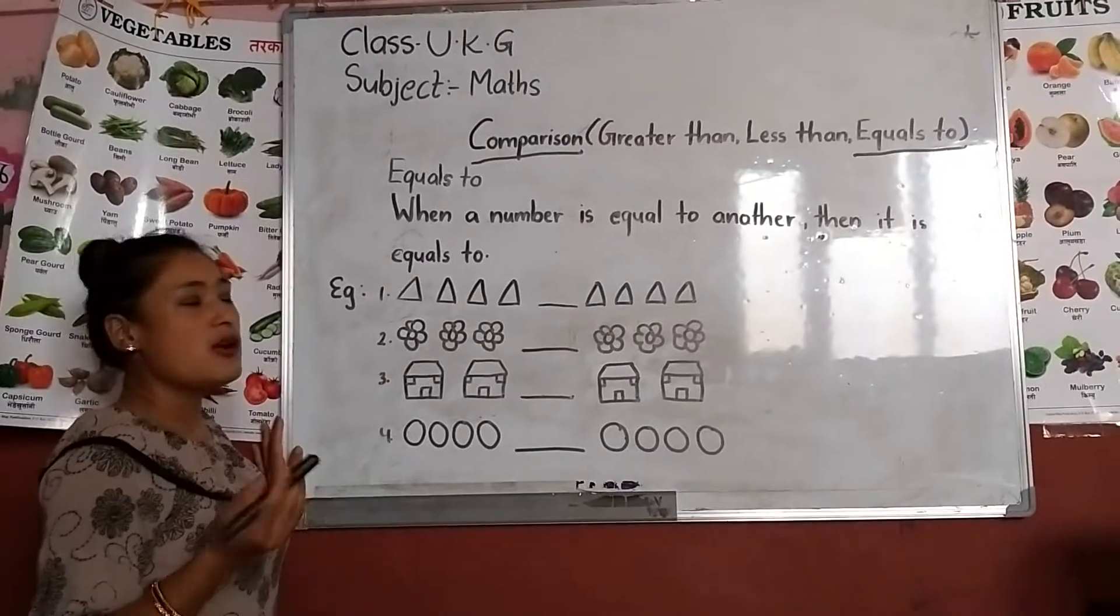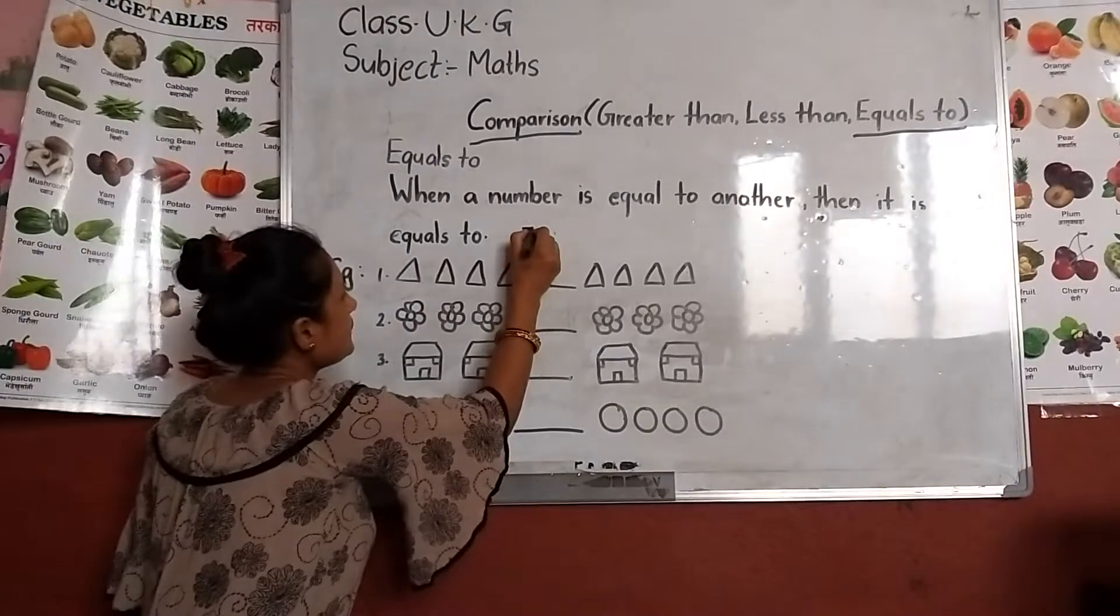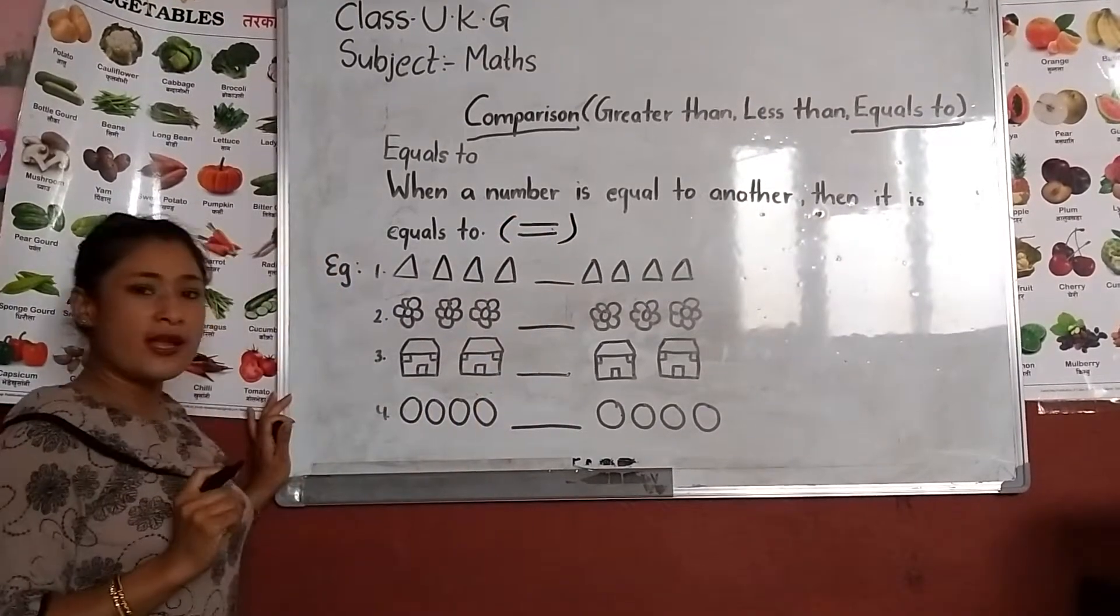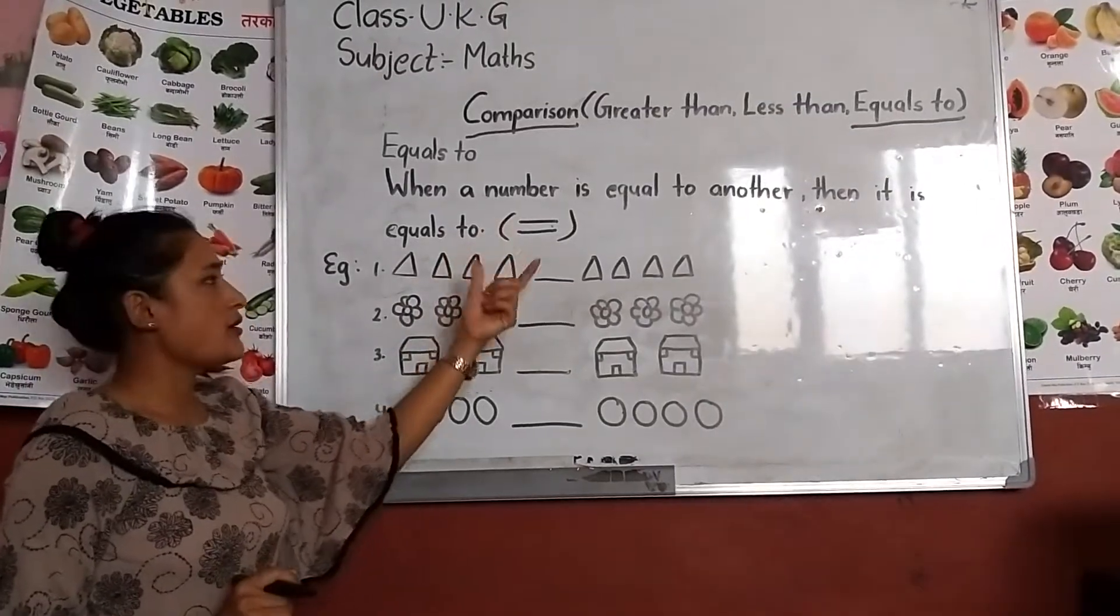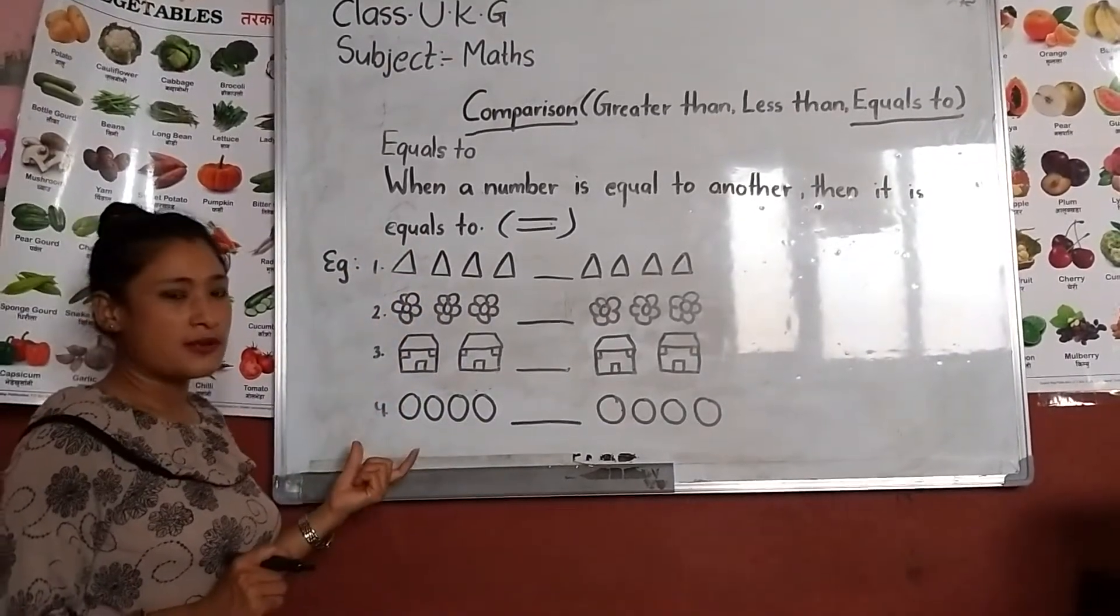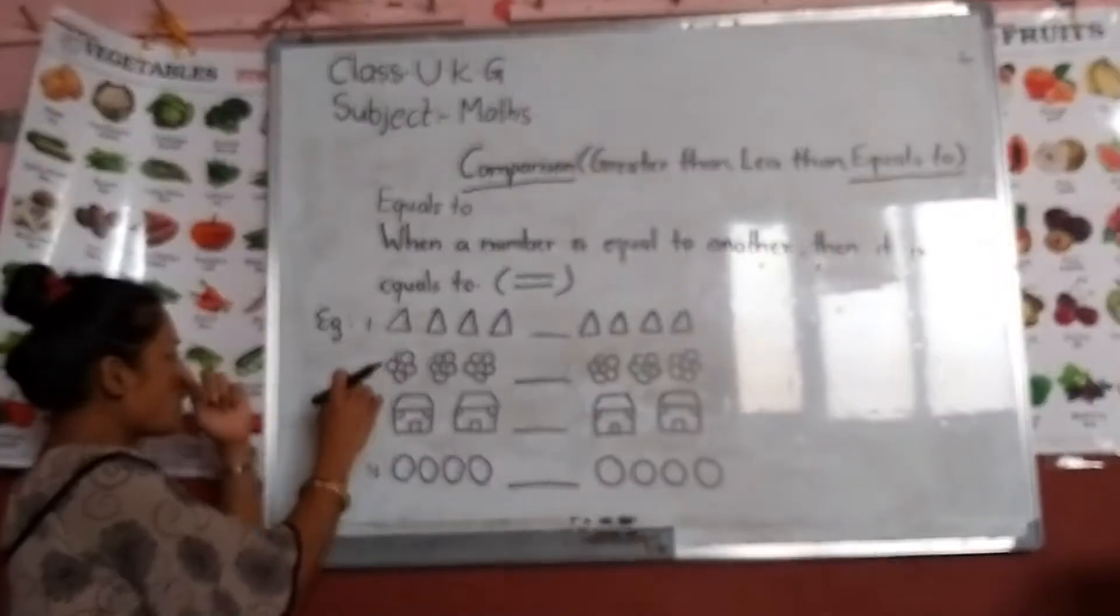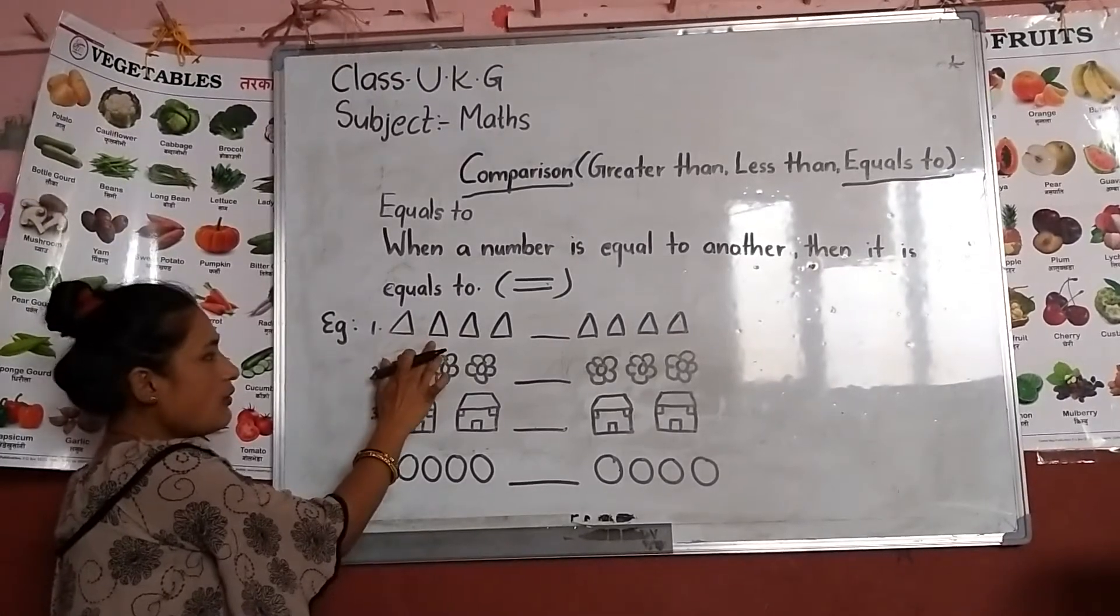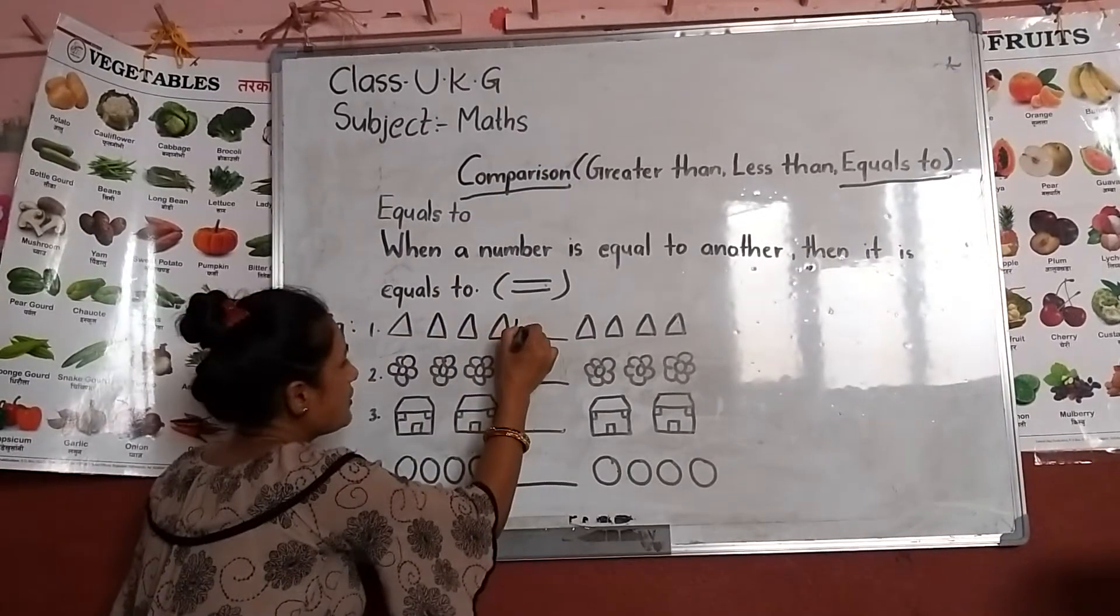How is this? You can see how many are here. One, two, three, four. So what is the triangle? Four triangles. This is the same way.